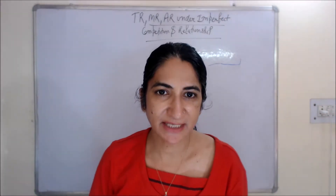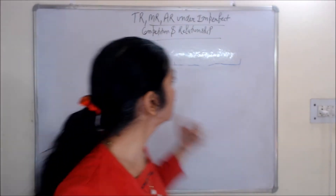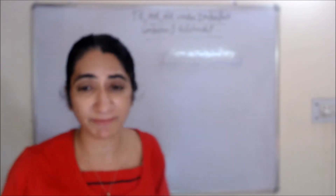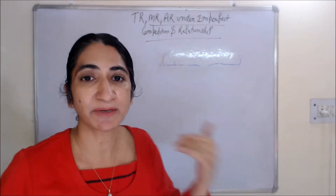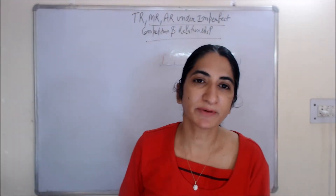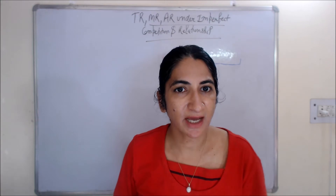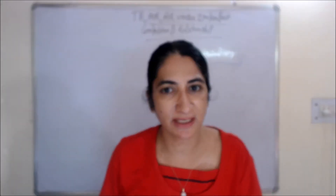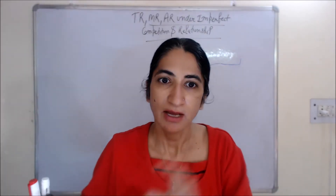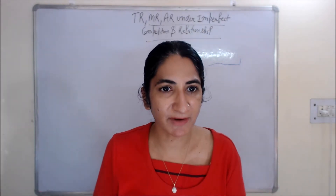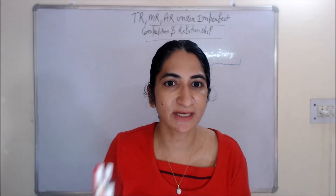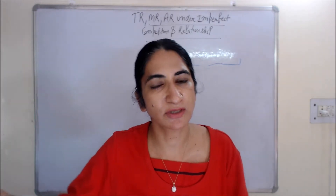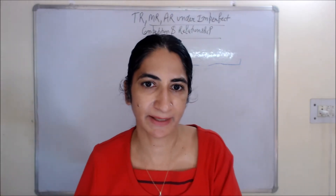Hello students, my name is Meenie Seti. Today I am going to discuss TR, MR, and AR under imperfect competition and the relationship between them. In the imperfect competition market, if you want to sell your product in a higher amount, then you will have to reduce the price. In perfect competition price is constant, but in the imperfect market it is not constant — the firm is a price maker. If you want to increase your sales, you will have to reduce the price of your product.